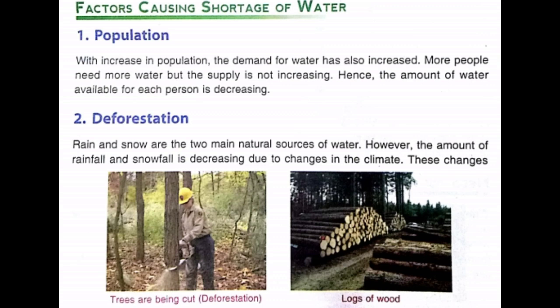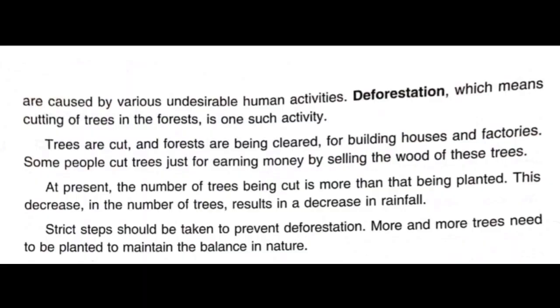The second reason is deforestation — the cutting down of trees in large numbers. Rain and snow are the two main natural sources of water. The amount of rain and snow is decreasing due to changes in climate, and these changes are caused by various undesirable human activities. Deforestation — the cutting of trees in forests — is one such activity.